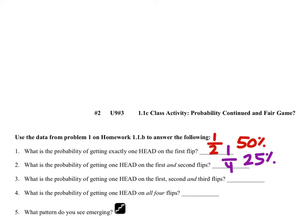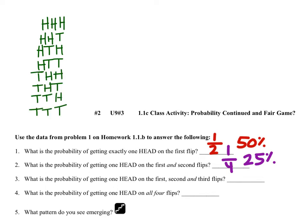Now let's consider three flips — the probability of getting heads on all three. You may have gotten heads-heads-heads, heads-heads-tails, heads-tails-heads, or heads-tails-tails. You can see a pattern forming. For three flips there are eight possible outcomes, and only one has heads on all three flips — that's one out of eight, which is 12.5%.